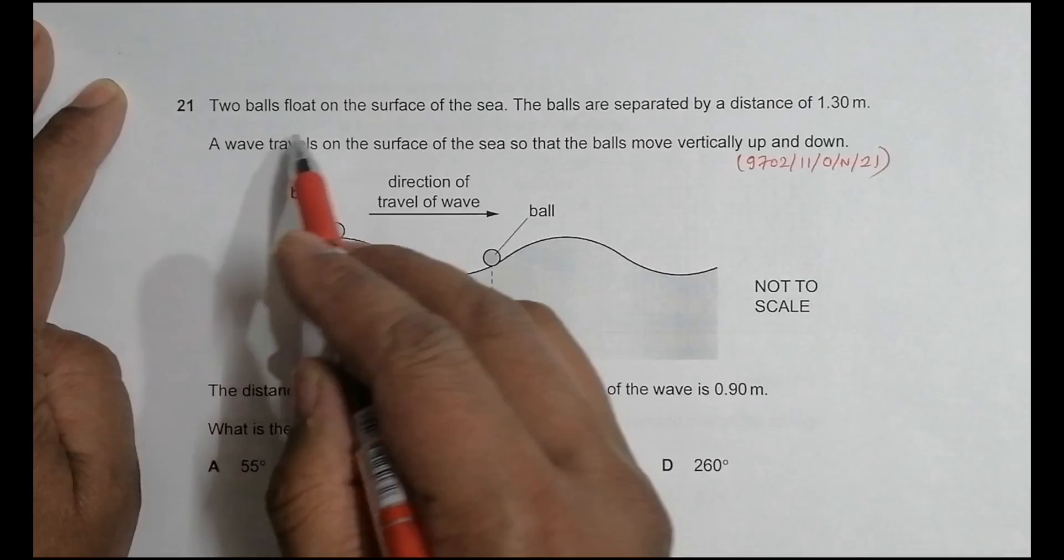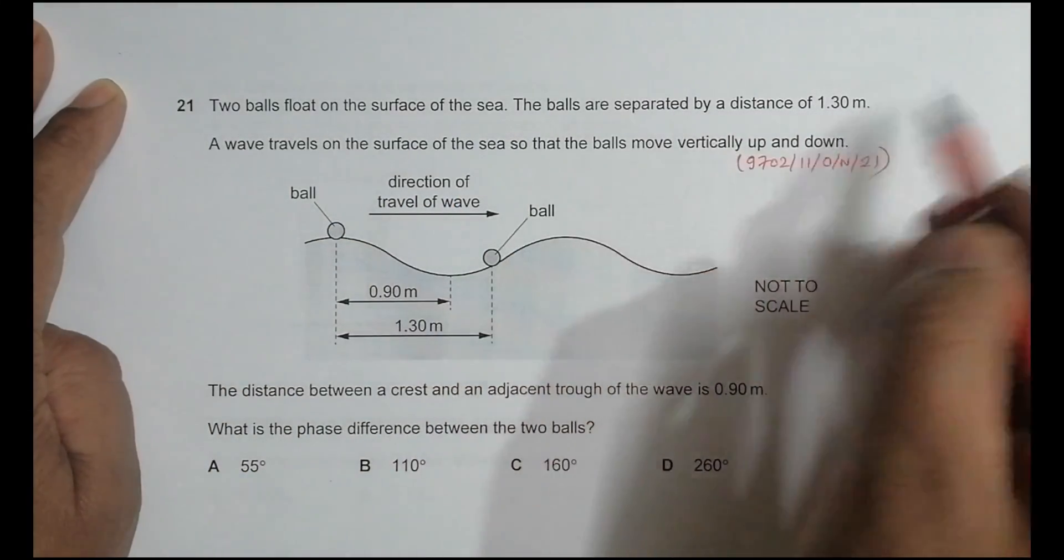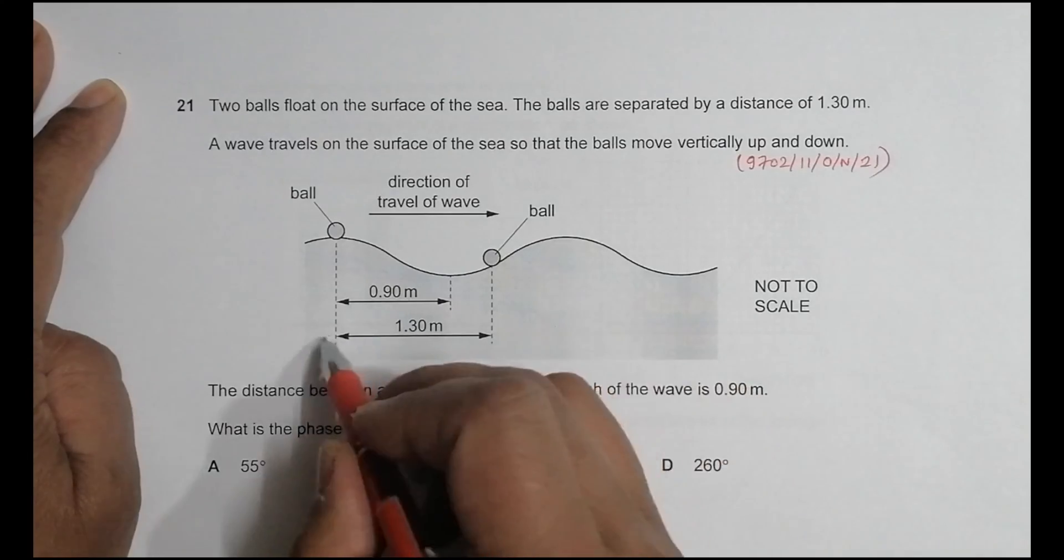It's about phase here. Two balls float on the surface of the sea. The balls are separated by a distance of 1.3 meters. So there's separation here.